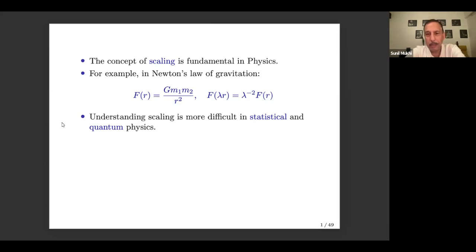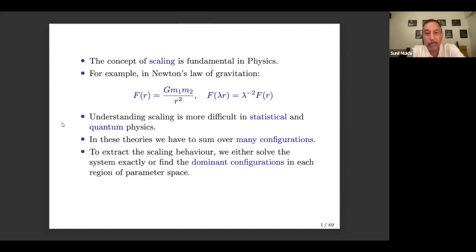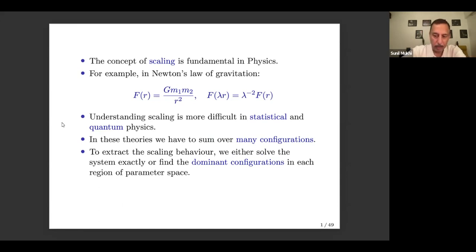That's a classical law, but in statistical or quantum physics, it's much more difficult to understand scaling behavior of laws. The reason is that in these theories, we have to perform a path integral which sums over many, many configurations. To extract the scaling behavior, we need to solve this system either exactly, or find the dominant configurations or saddle points in every region of parameter space, and then find the scaling behavior for those values of parameters.